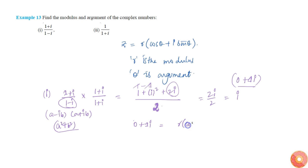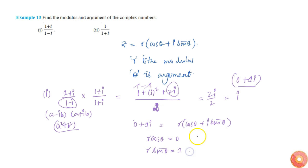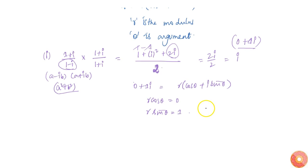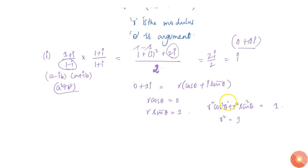Comparing 0 plus 1i with the polar form r cos theta plus i sin theta, we get r cos theta equal to 0 and r sin theta equal to 1. Squaring and adding them, r squared cos squared theta plus r squared sin squared theta equals 1, so r squared equals 1, which implies r equals 1.